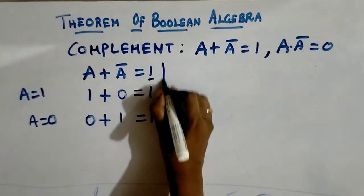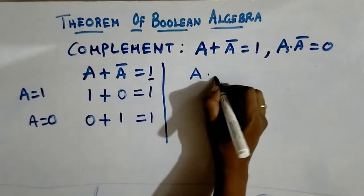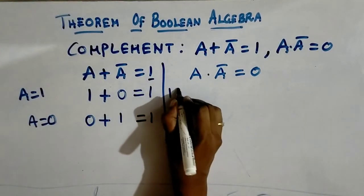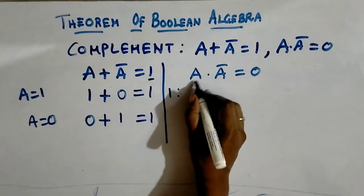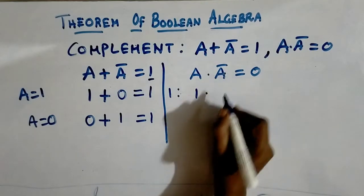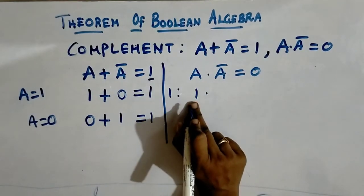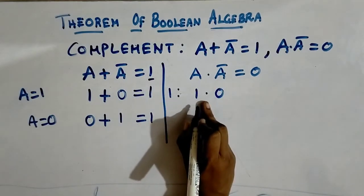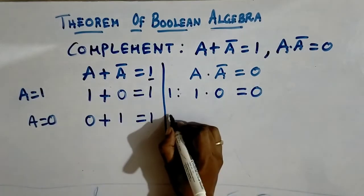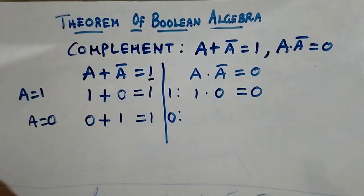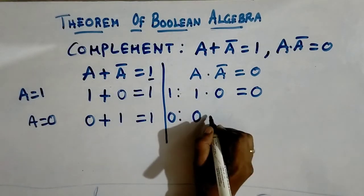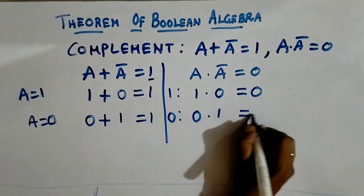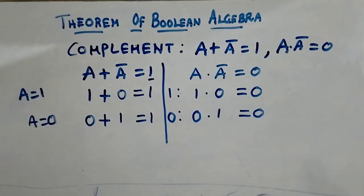The next complement theorem is a dot a-bar equals 0. First, substitute a value as 1: 1 dot a-bar — the complement of 1 is 0 — so 1 dot 0 equals 0. When I give a value as 0: a value is 0, a-bar is the complement of a, so we get 1. Then 0 dot 1 equals 0. So this is the complement theorem.